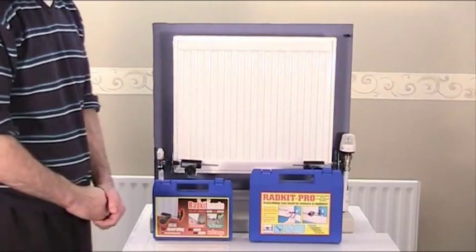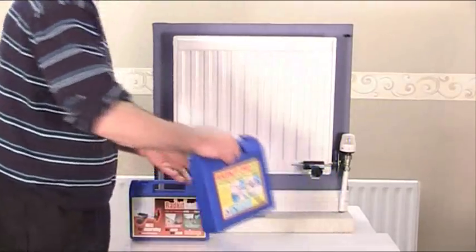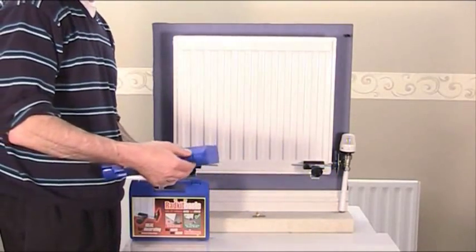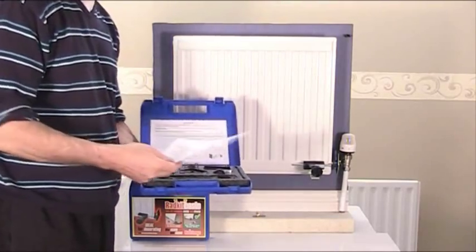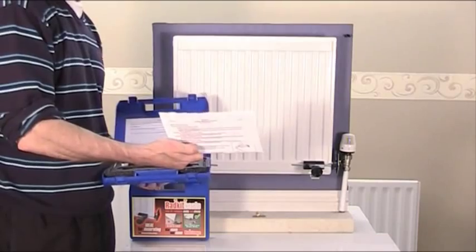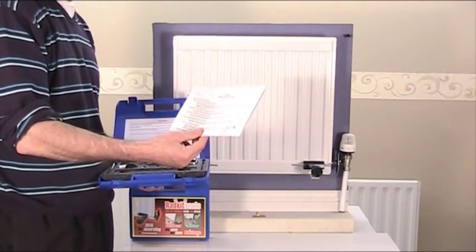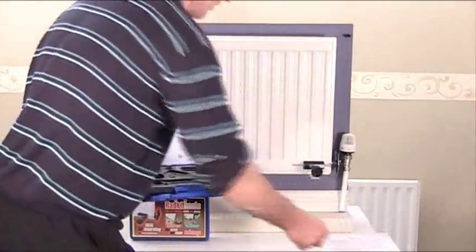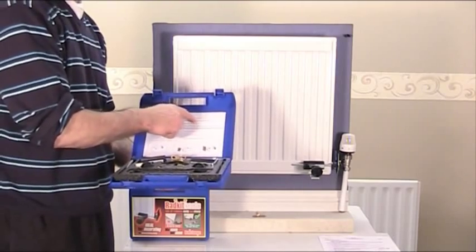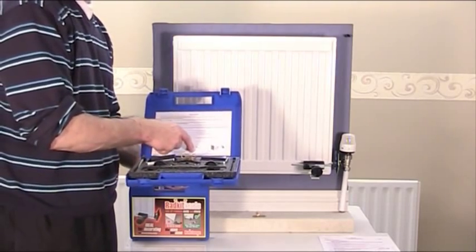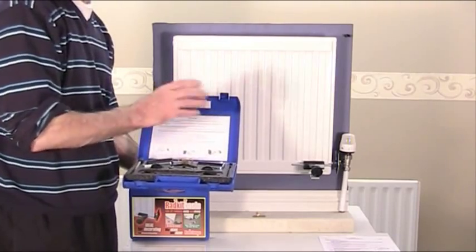So we've got two types of kits. We've got the Radkit Pro which is this one here, so I'll just show you inside what you get. In any case you get a full set of instructions with handy hints that tell you exactly how to go through the process of taking your radiator off. There's a quick set of instructions permanently stuck in the back of the lid here, so once you've lost the other instructions you've always got them. But once you've actually done it you won't need the instructions again anyway.